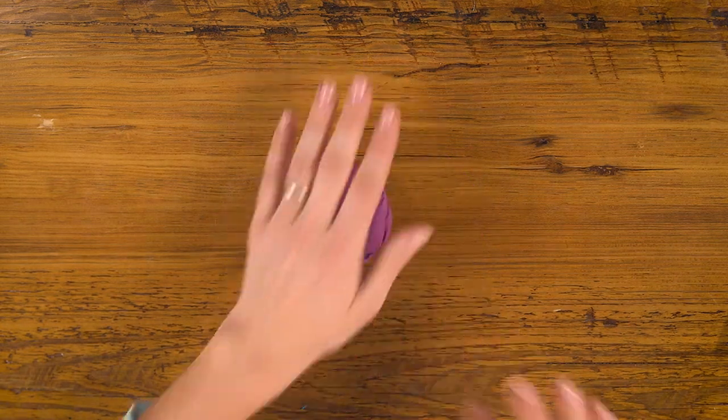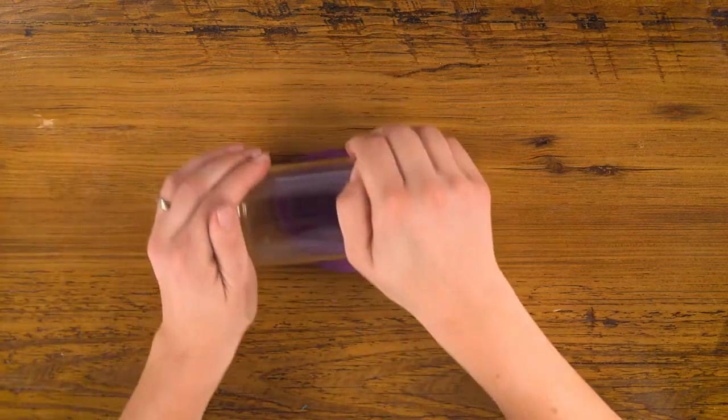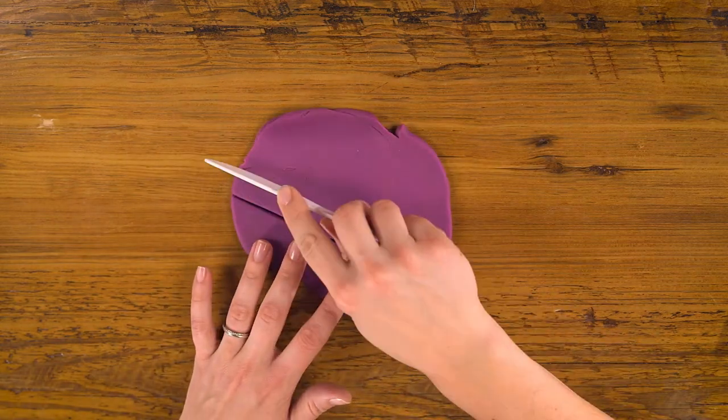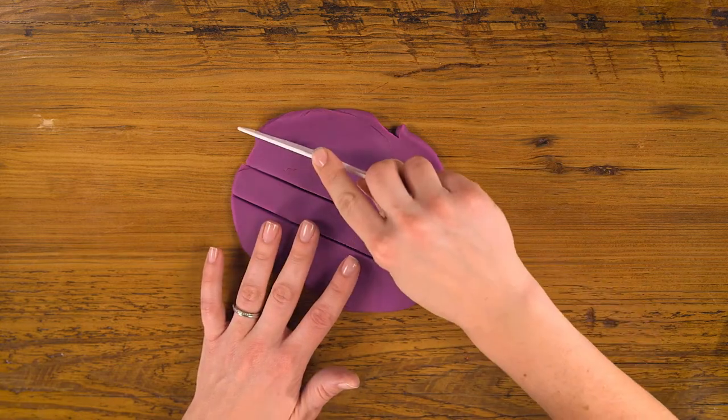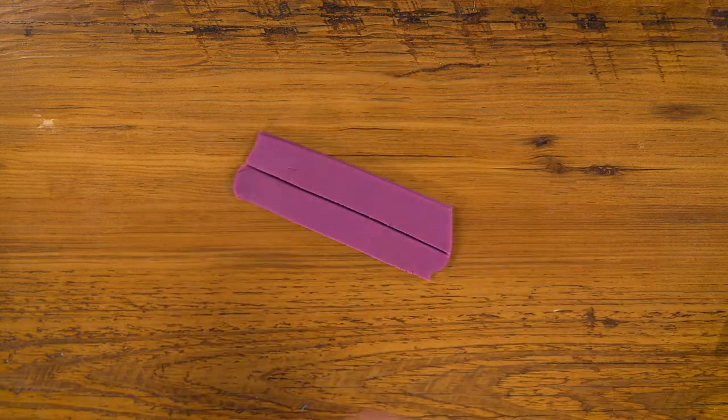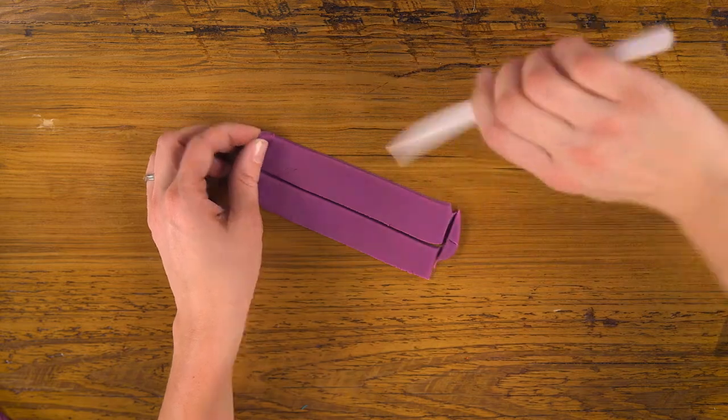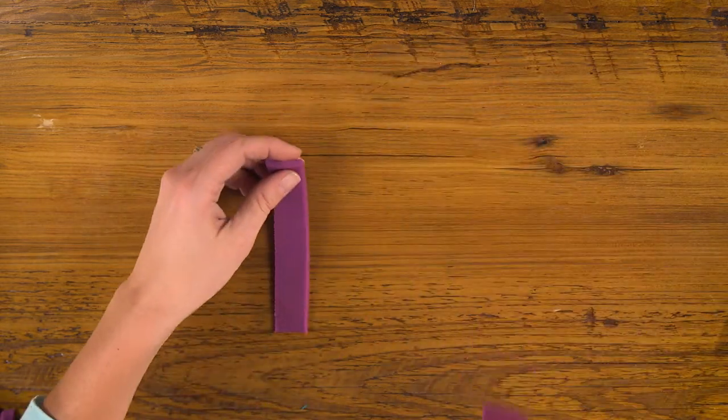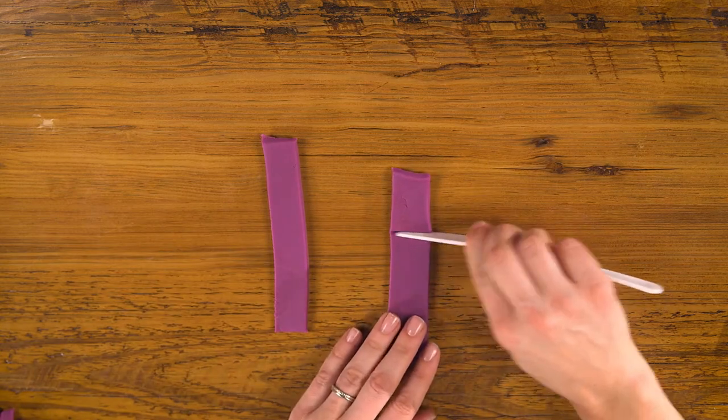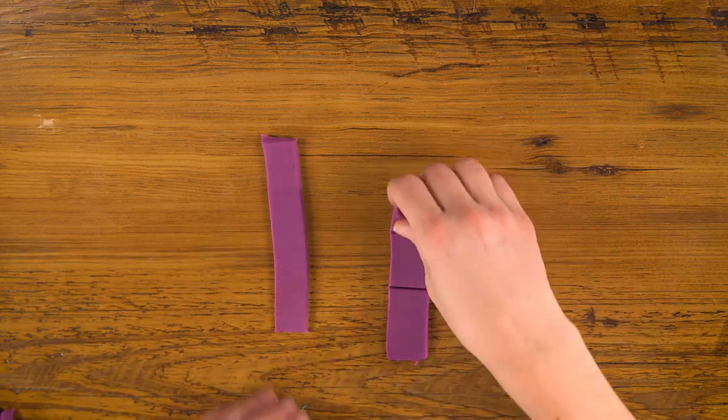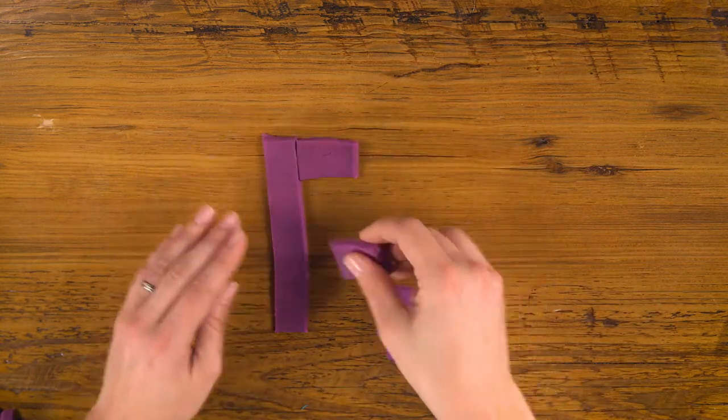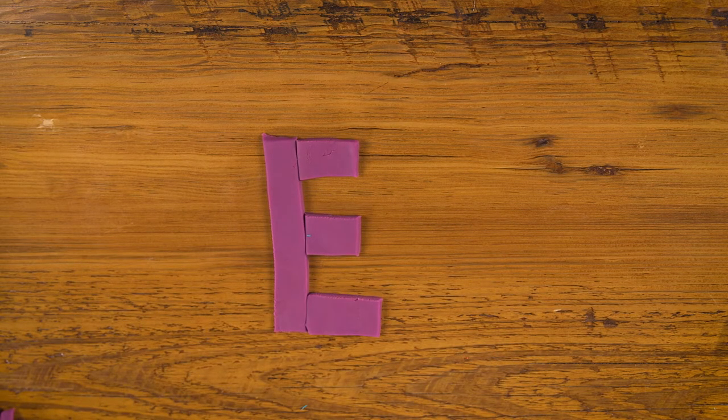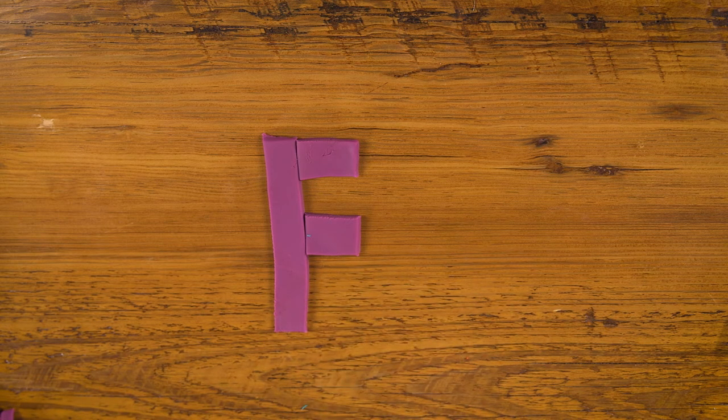For E, I'm going to use purple again and roll it out flat. Then I'm going to use my knife to cut two equal strips. And I'll trim up the ends to make them neat. And I put one here and cut the other into three parts. There's your E. Take away the bottom, and you have your F.